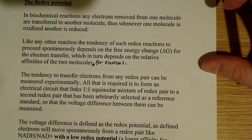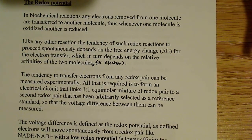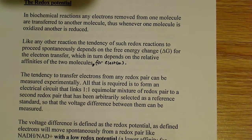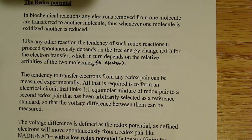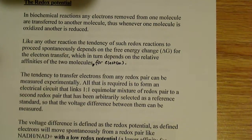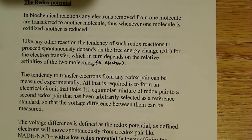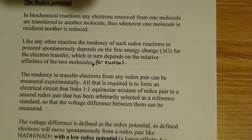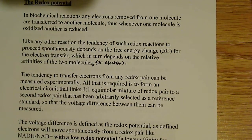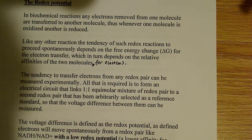Like other reactions, the tendency of these redox reactions to proceed spontaneously — that is, they have a negative delta G, they're favorable reactions — depends on free energy. That's delta G for the electron transfer. We want it to be negative because we want this to be a spontaneous, favorable reaction.